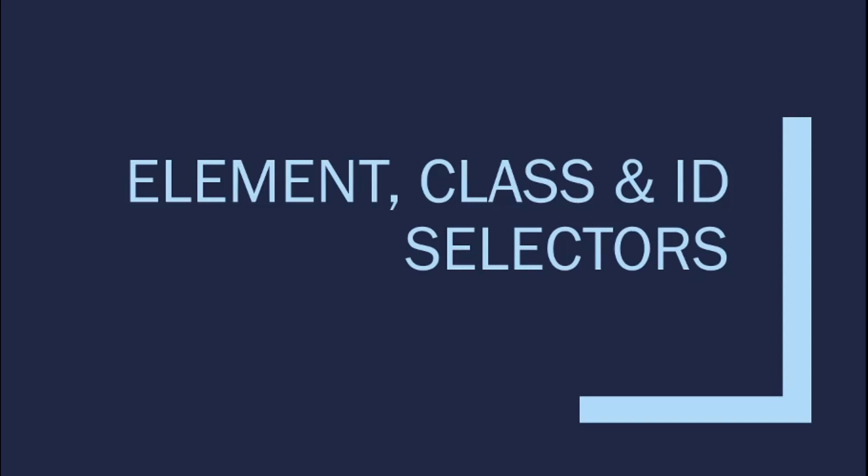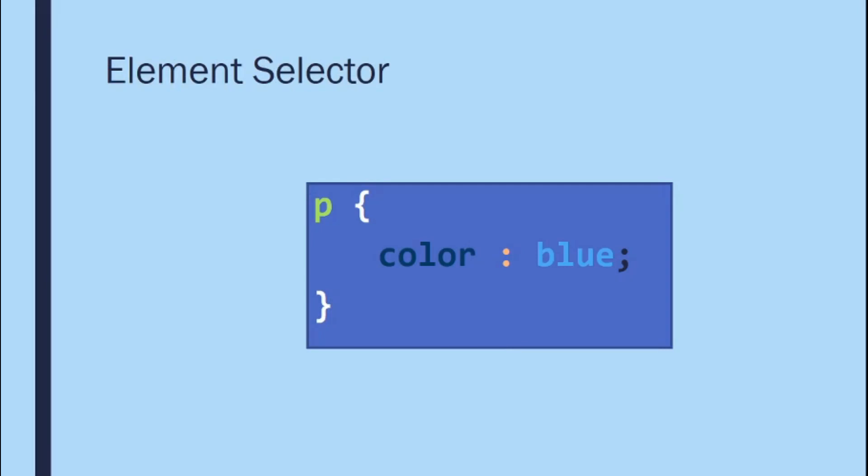CSS selectors are very important because they tell the browser where to apply the designs we set and which elements will inherit those rules. Selectors are also used by JavaScript frameworks to point to specific HTML elements. It's a must-have skill for web developers. There are three selectors we'll discuss: the element selector, the class selector, and the ID selector.